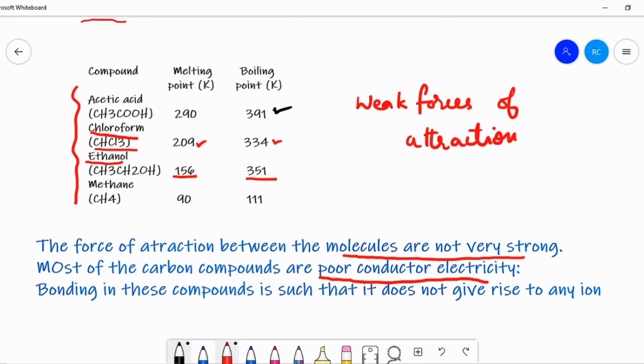Most of the carbon compounds are poor conductors of electricity. Why? Because these compounds are not producing any ions. Usually ions, positive and negative ions make the passage of electricity. In these compounds, the ions are not present. That is why they are not conducting electricity.